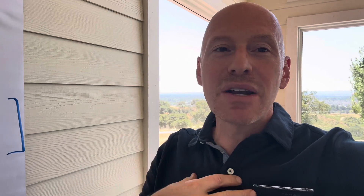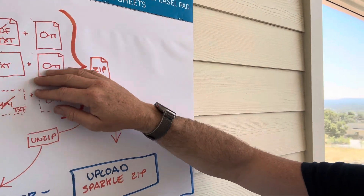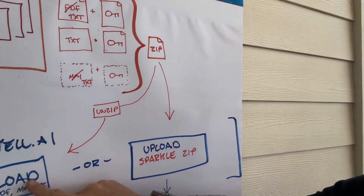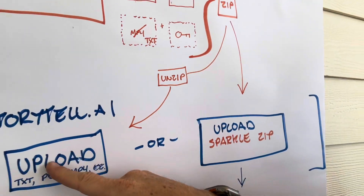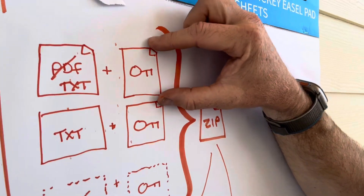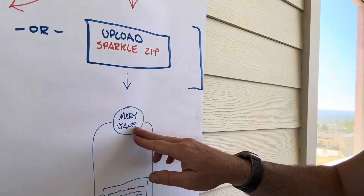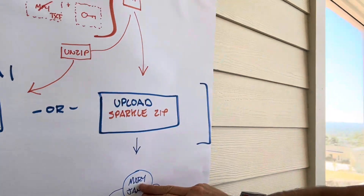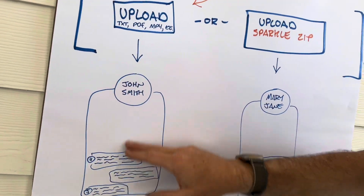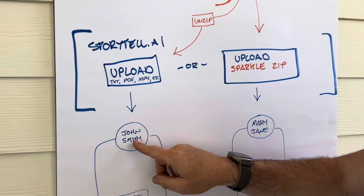If you have a security posture that's even stricter — where you say you don't even want Storytel to know what the data mapping looks like — then you can take the zip file, unzip it, and upload just the raw files with the swapped data as if it's regular text or PDF data. Storytel won't even know it's synthetic data. You keep the key so you know what the mapping looks like, but we don't. So the virtual me would only have the synthetic name, and you would have to remap that on your side — knowing that John Smith is actually really Mary Jane.